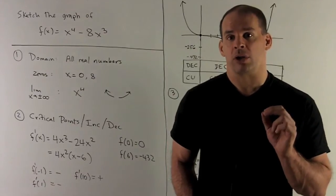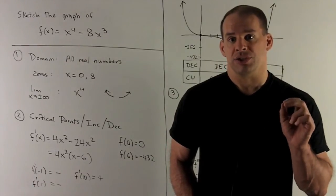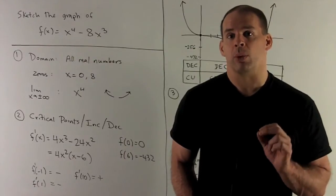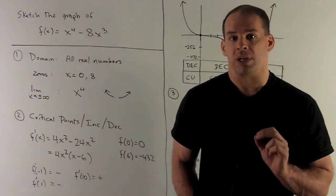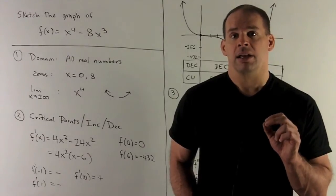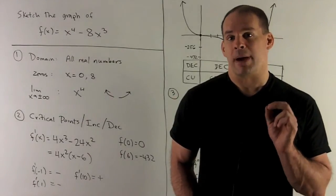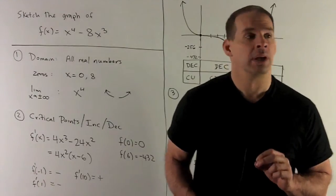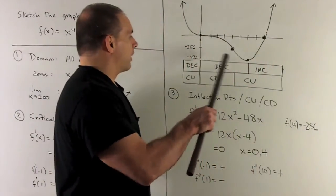We're going to have critical points at 0 and 6. We've already plotted the point at 0, so I want to plot the point at 6. I put it into the original function, and I get f(6) = -432.